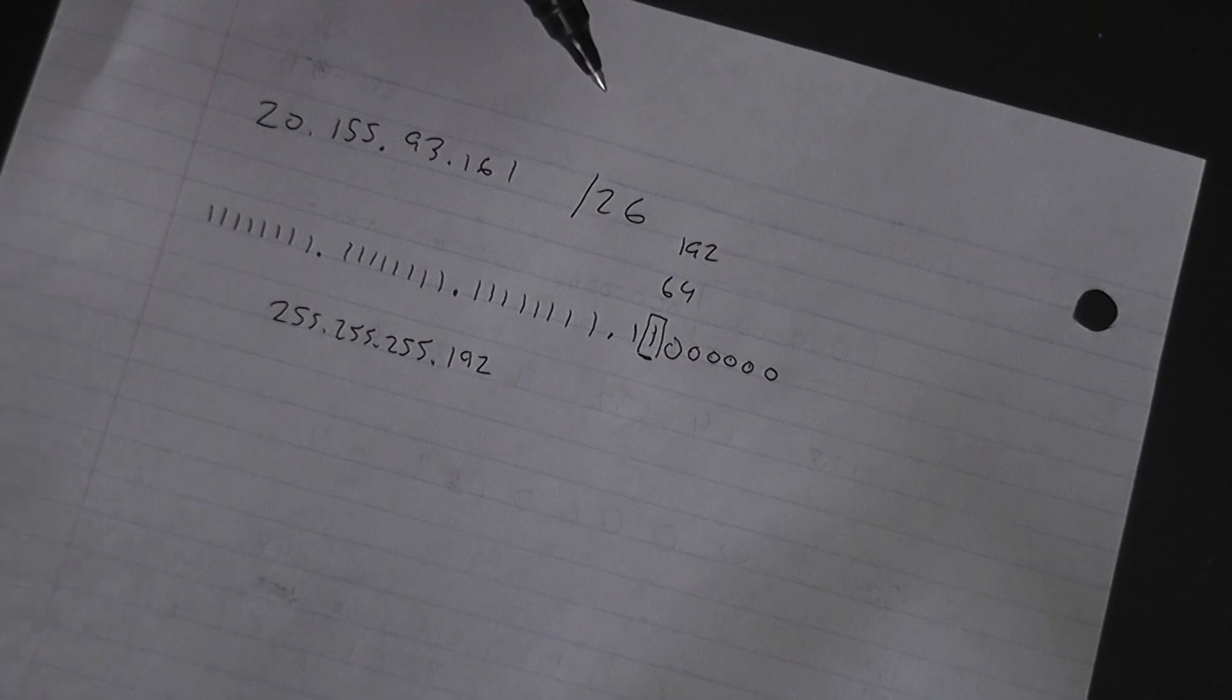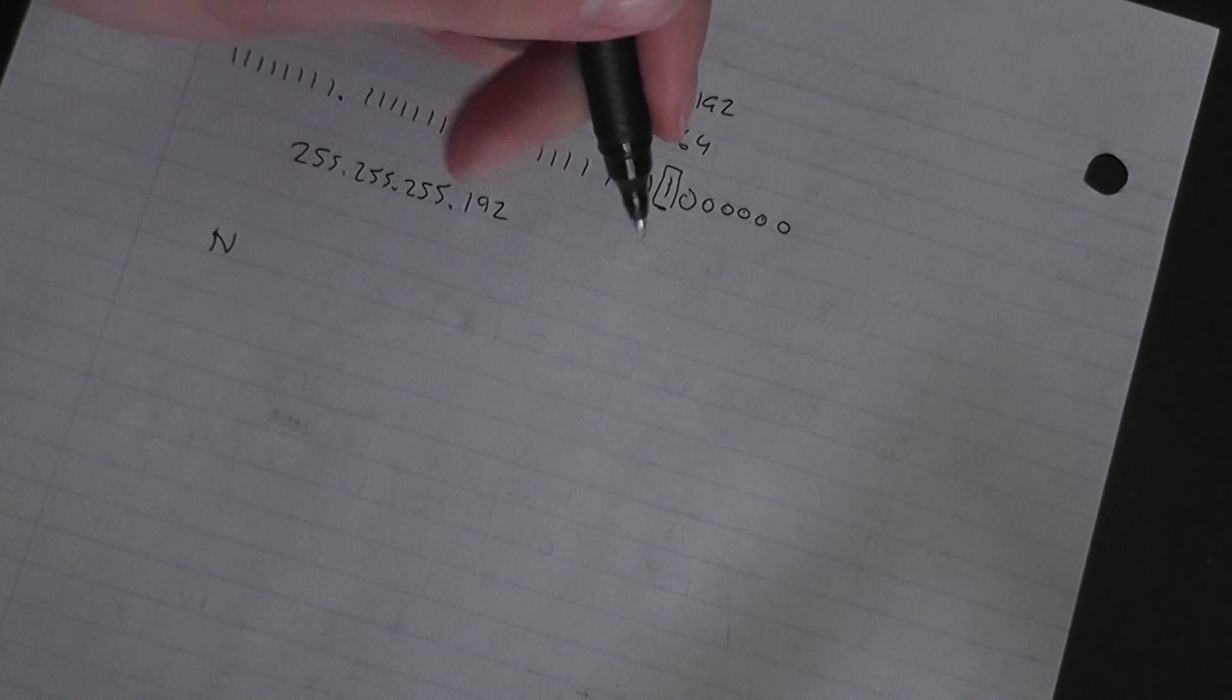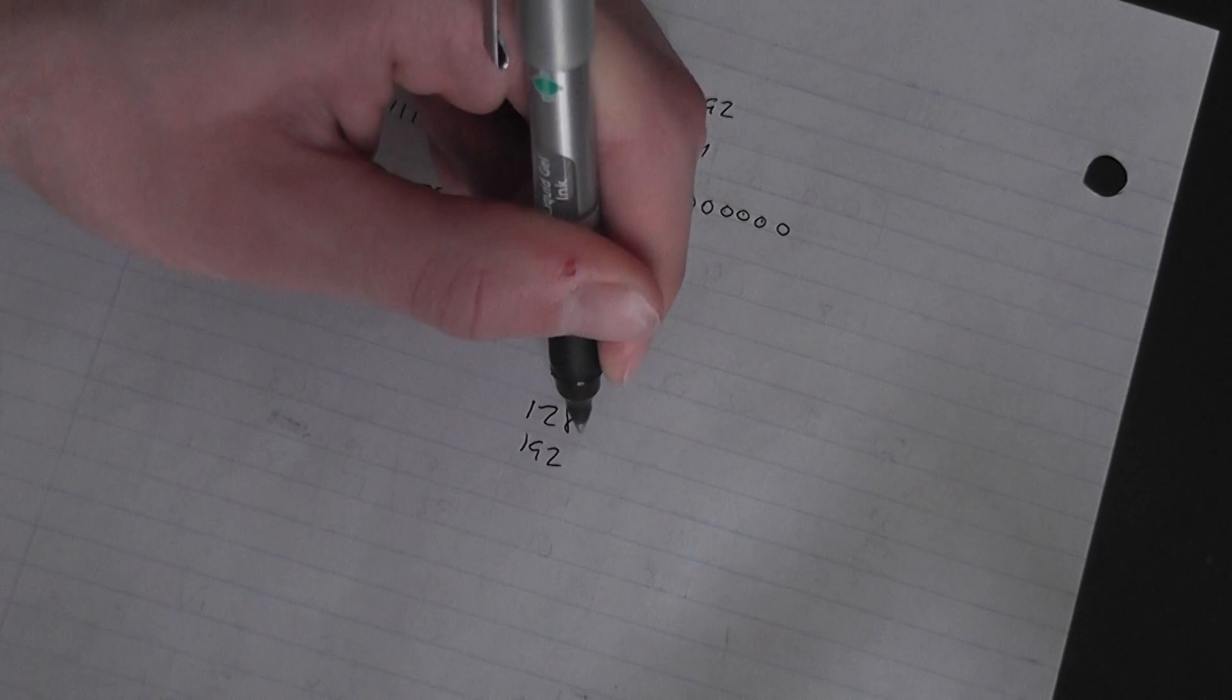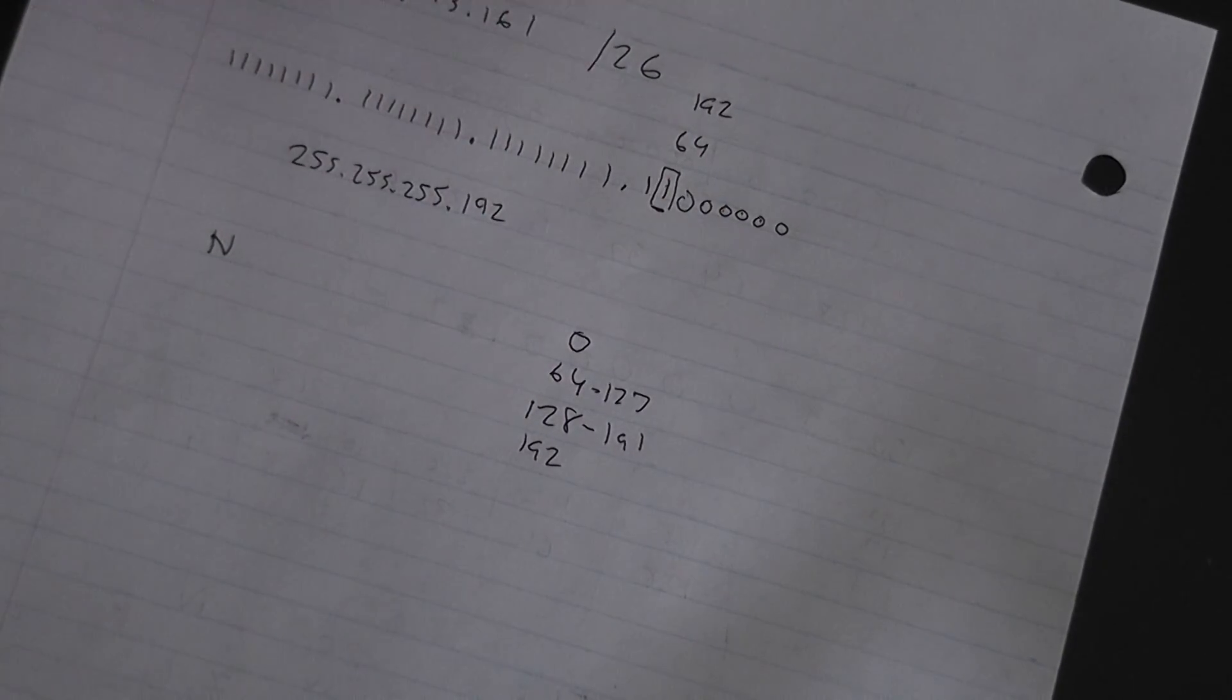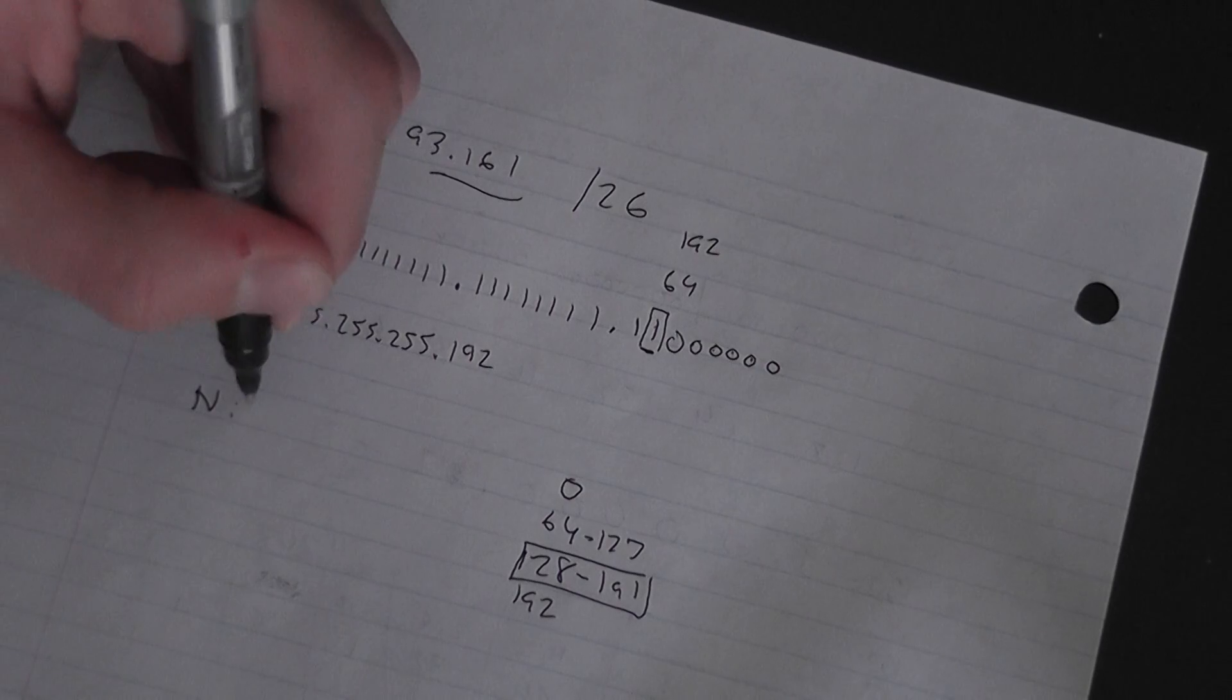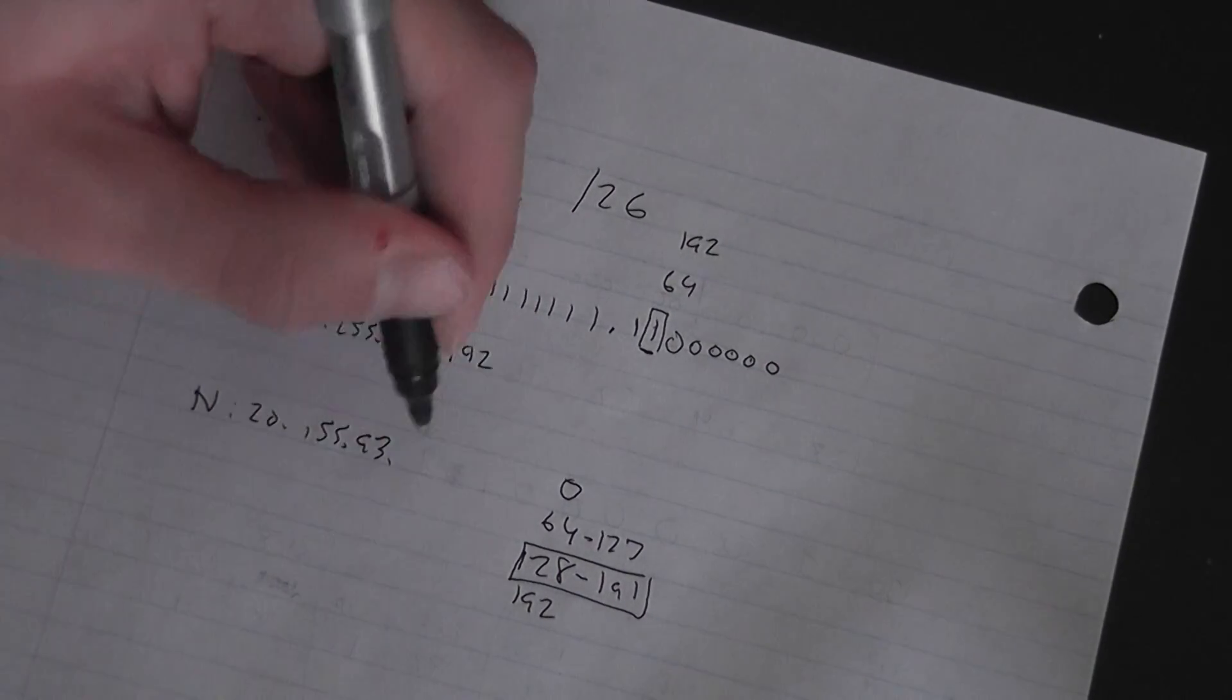Now your network would be 0, 64, 128, 192. The ranges are 0 to 63, 64 to 127, 128 to 191. Now you look: where does 161 fall under? 161 falls under 128 to 191.